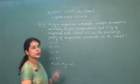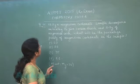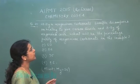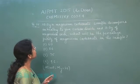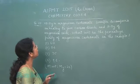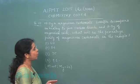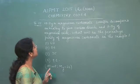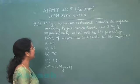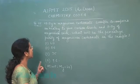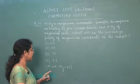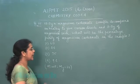Next question is question number 25. 20 gram of a magnesium carbonate sample decomposes on heating to give carbon dioxide and 8 gram of magnesium oxide. What will be the percentage purity of magnesium carbonate in the sample? Four options are given: first 60, second 84, third 75, and fourth 96.